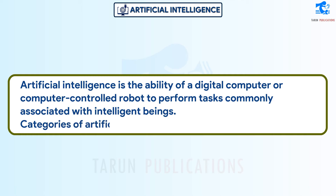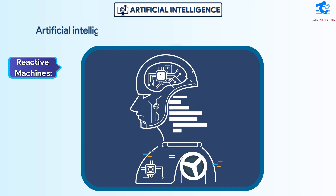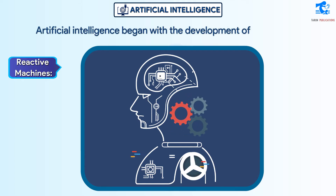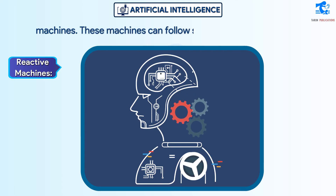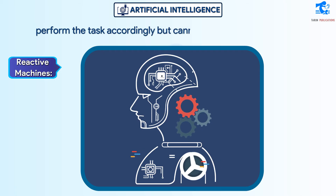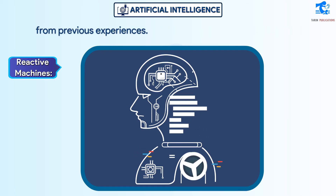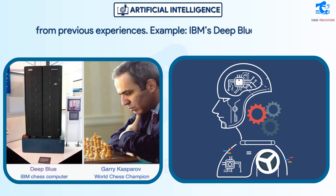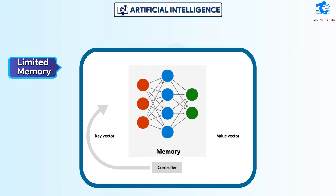Categories of Artificial Intelligence include Reactive Machines, where AI began. These machines can follow simple instructions and perform tasks accordingly, but cannot store memory or learn from previous experiences. An example is IBM's Deep Blue machine, which beat chess grandmaster Gary Kasparov.